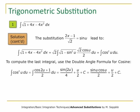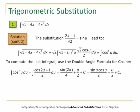To compute this last integral, we use the double-angle formula for cosine: cos²(u) = (cos(2u) + 1)/2. Therefore, the integral of cos²(u) du equals the integral of (cos(2u) + 1)/2 du, which equals sin(2u)/4 + u/2 + C. Since sin(2u) = 2 sin(u) cos(u), we have sin(2u)/4 = sin(u)cos(u)/2. So the answer is sin(u)cos(u)/2 + u/2 + C.